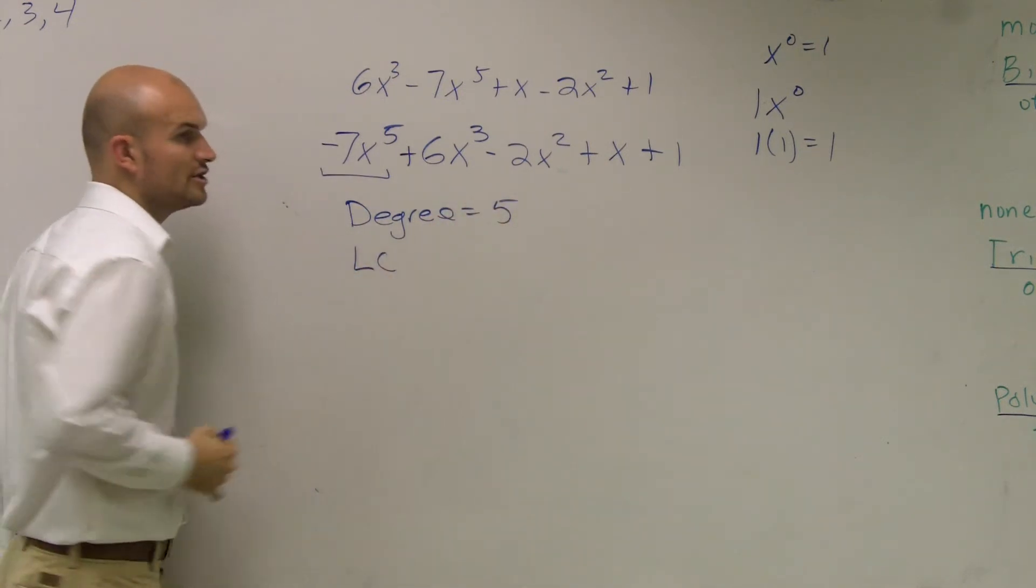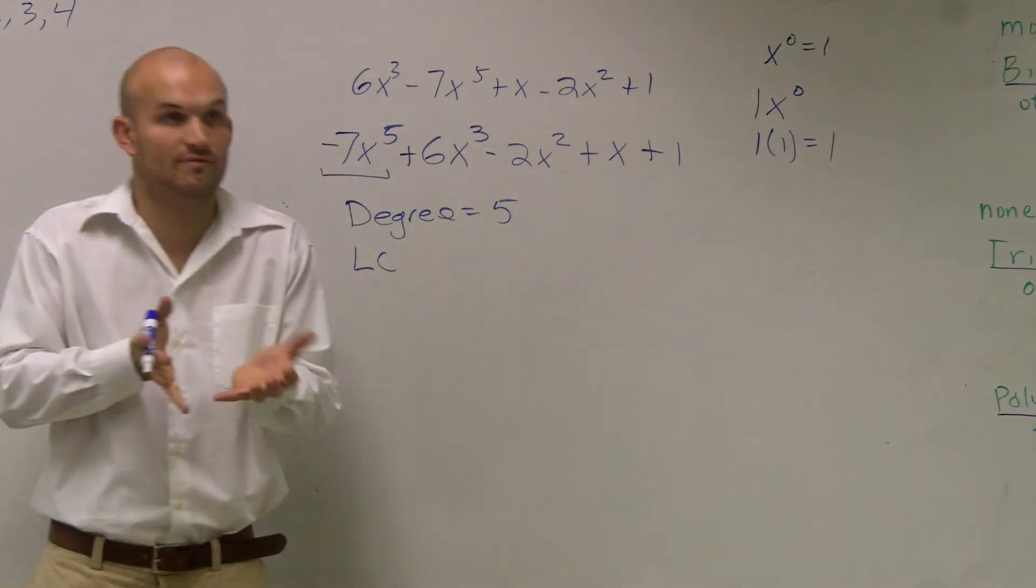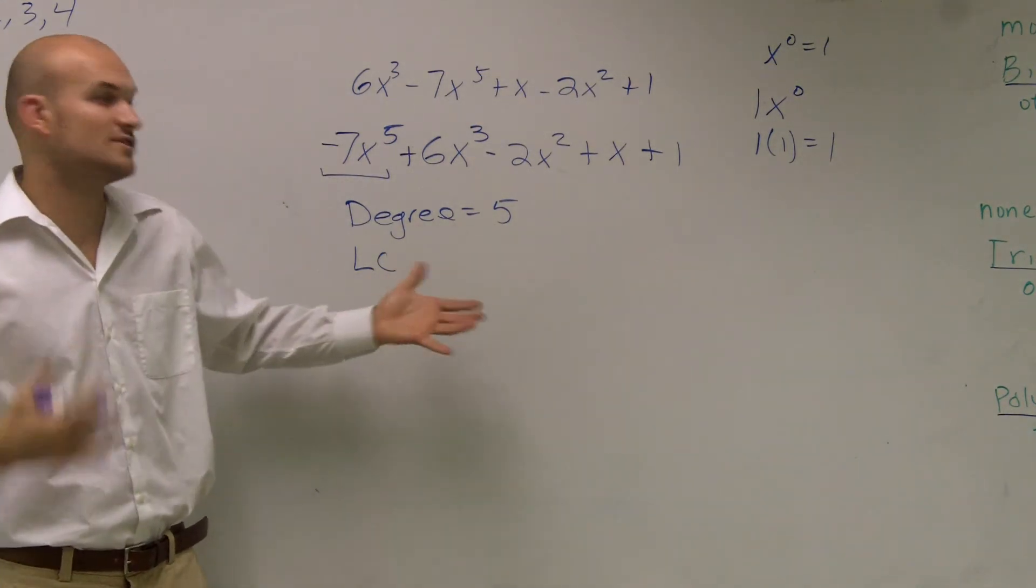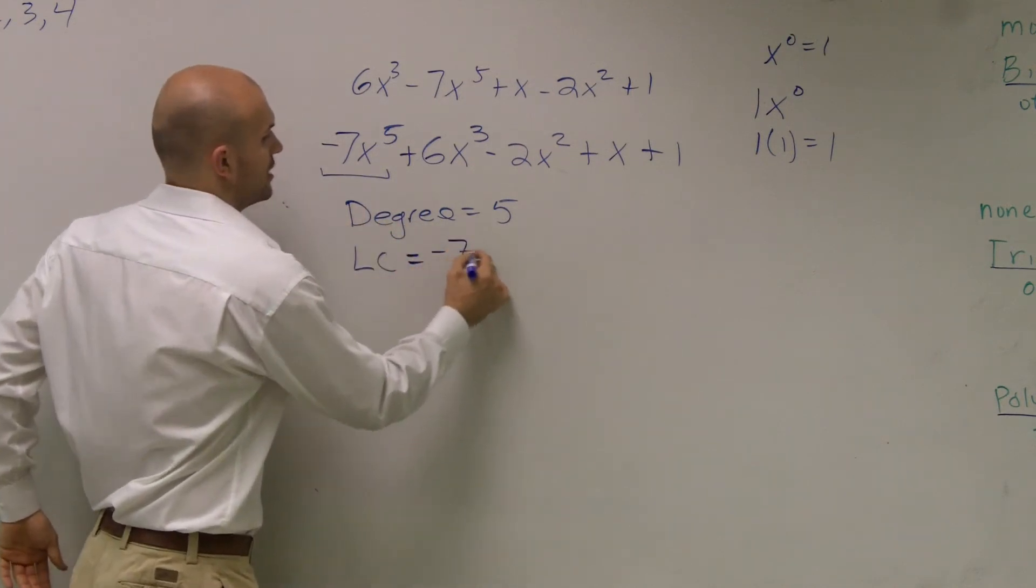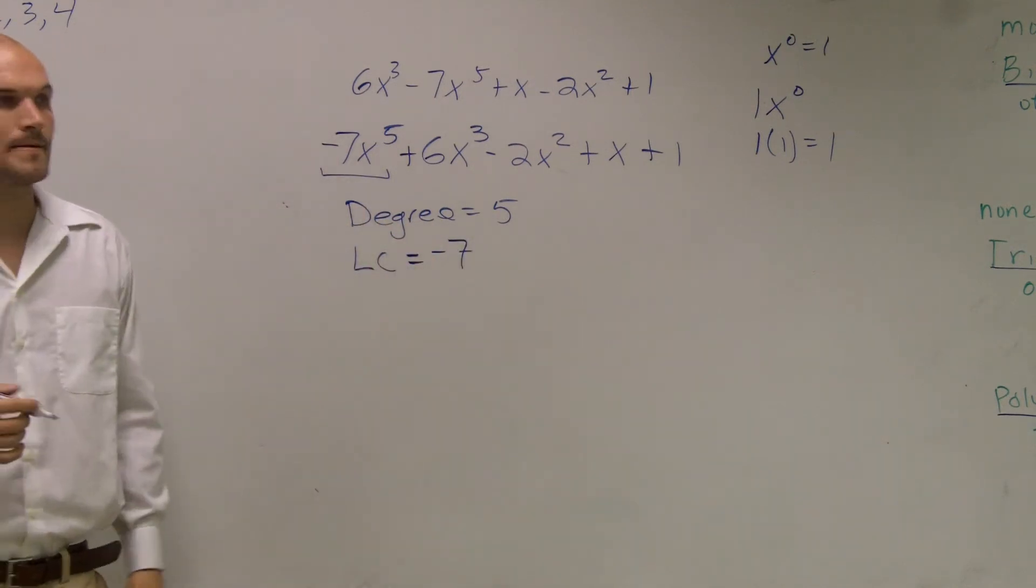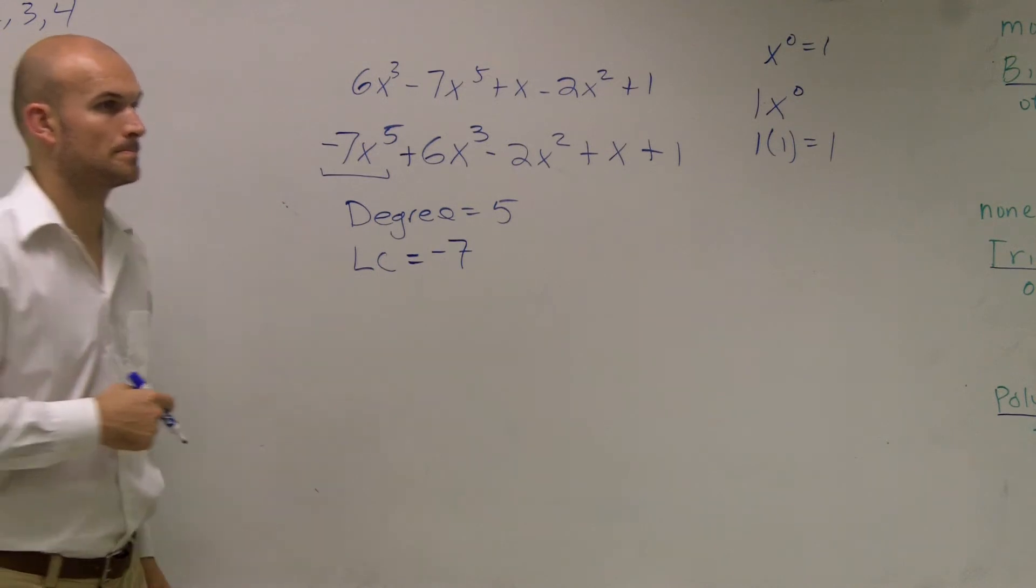And my leading coefficient, remember a coefficient is your number in front of your variable. So my leading coefficient is that number of my leading term, which is a negative 7. Well, if that's a negative 7, that's not greater than 6. You're right.